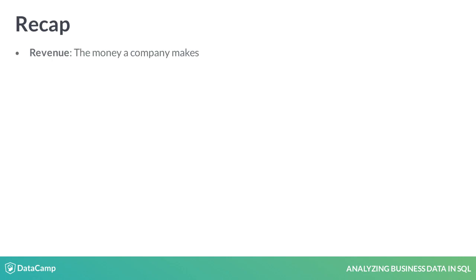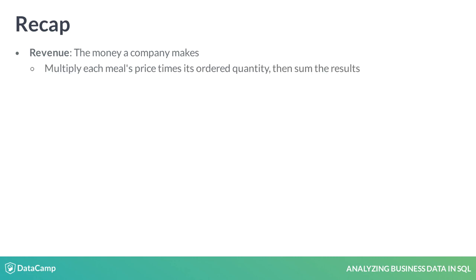Revenue is the money a company makes, which in Deliver's case is the money that its customers pay to order the meals. Calculate revenue by multiplying each meal's price by its ordered quantity, then sum the results.